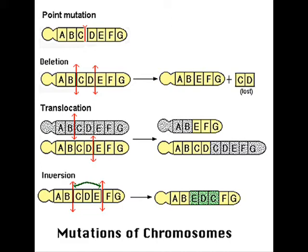Number two: Deletion is when a portion of a chromosome is taken away from a chromosome. Number three: Substitution, otherwise known as translocation, is the transfer of one section of a chromosome to a non-homologous chromosome.